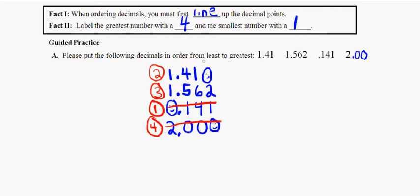And finally, in order to fully answer the question, it says to put the decimals in order from least to greatest. So the smallest one is 0.141. And then after that, I like to use the numbers in the original one. So after that, it's 1.410. But the original one says 1.41. So we're going to put 1.41.